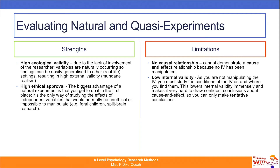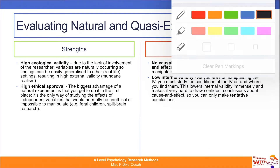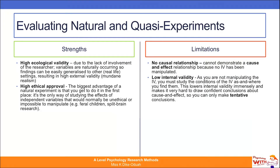We argue that Sperry's split brain research is low in internal validity because Sperry could not say to all of his 11 patients, 'I want all of you to have your brains split at this particular time point.' They all had their brains split at different time points, done by different surgeons. This is what we mean by saying that you don't manipulate the independent variable — you're literally stuck with it as and where you find them.